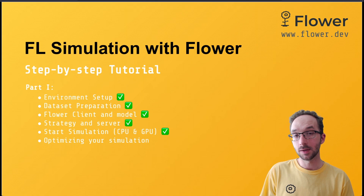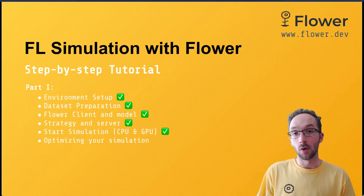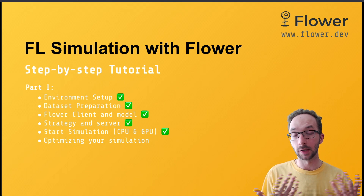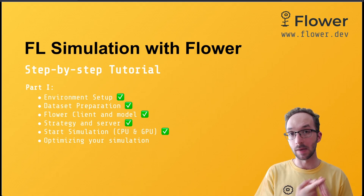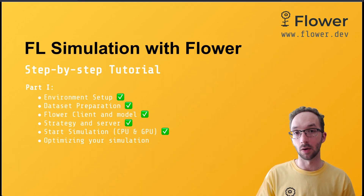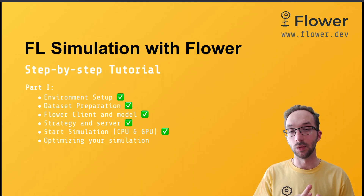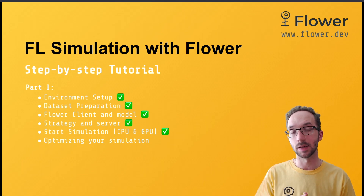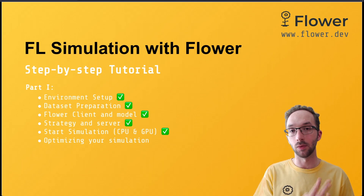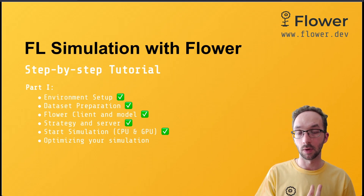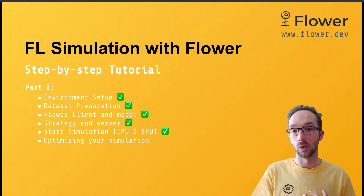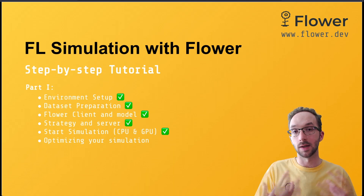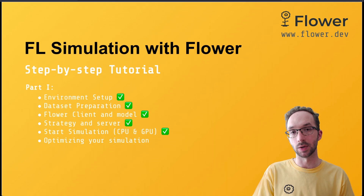Hi, so after five videos, if you have been following along, you already know everything you need to implement your very own federated learning pipelines using Flower for simulation. You know how to take an off-the-shelf dataset and partition it so every client gets its own local dataset. You know how to design your Flower clients, and in particular how to set up the fit and evaluate methods that are the key elements for clients to do local training and local evaluation. You know how to choose a strategy and how to configure elements like how many clients are involved during the fit, how many clients are involved in evaluate, and how the function that performs global evaluation looks like. And you already know how to start a simulation and how to assign different CPU and GPU resources to your clients.